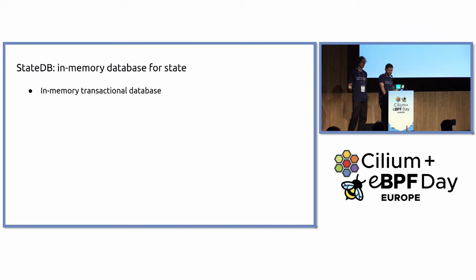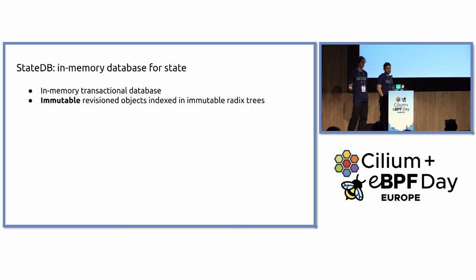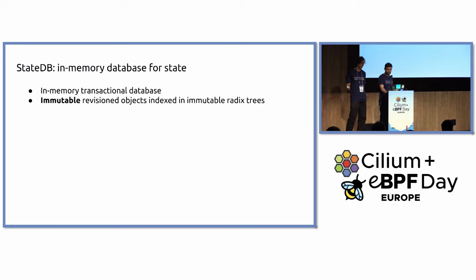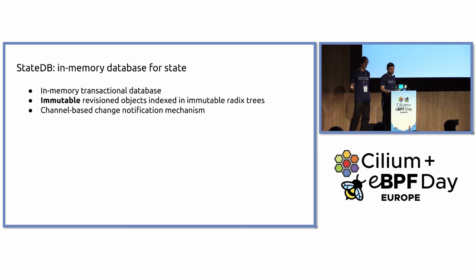So how do you implement this desired state? It's an in-memory database. Instead of traditionally writing things with hash maps and subscriber patterns from scratch, we go for a database approach that does these things for you. It's transactional, which allows doing writes in a single transaction that can then be observed as a batch by the reader, which improves throughput. Everything is stored immutably in StateDB using immutable trees, which allows for lockless readers. Everything is revisioned, which allows querying things as they change over time.